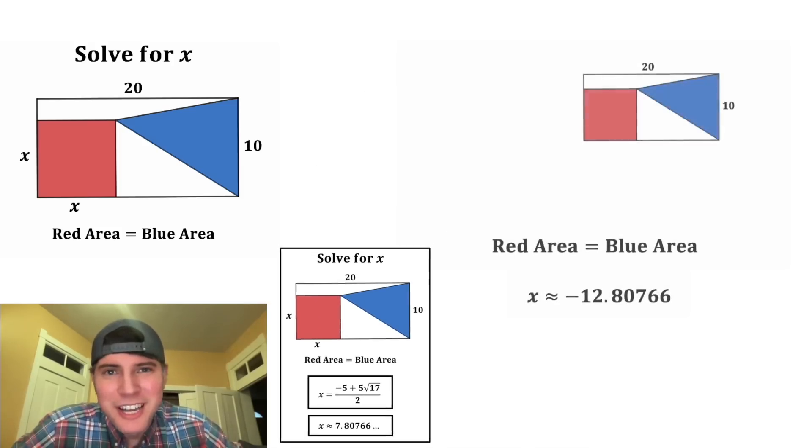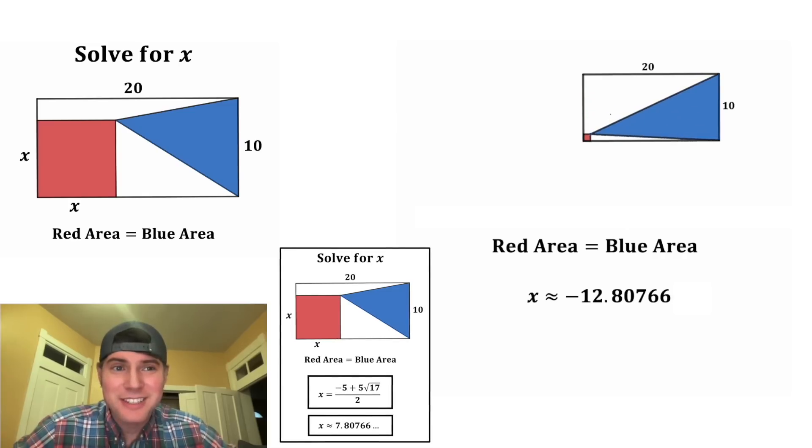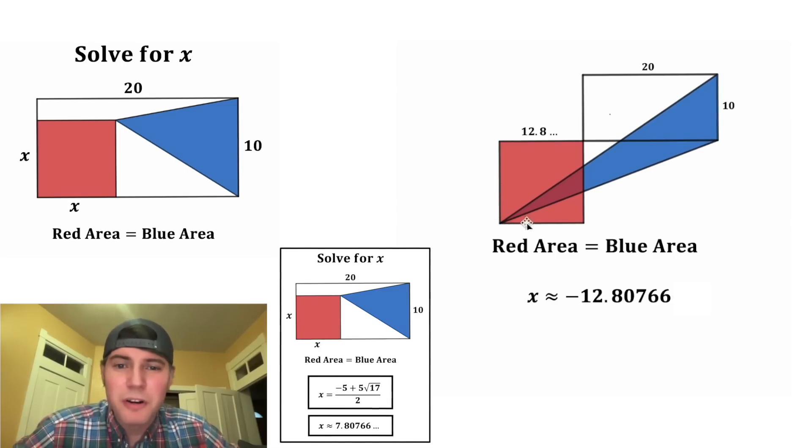But I want to explore the negative answer. All of these are positive values of x. But if we leave the rectangle, all of these would be negative values of x. And if we keep going until we hit negative 12.80766, that gives us this right here. And now let's check out this answer.